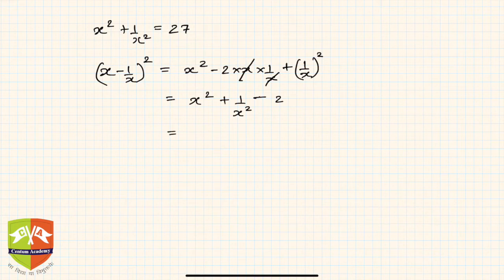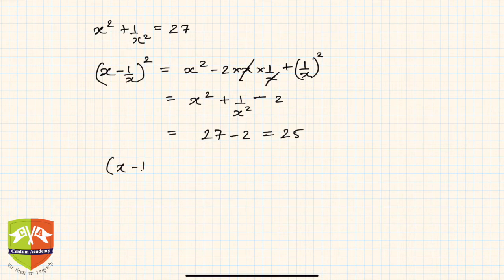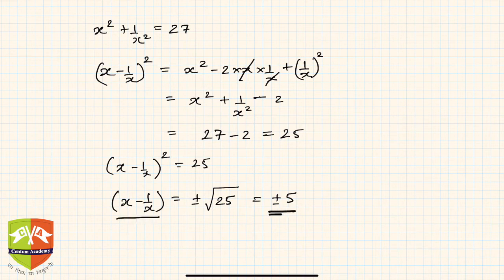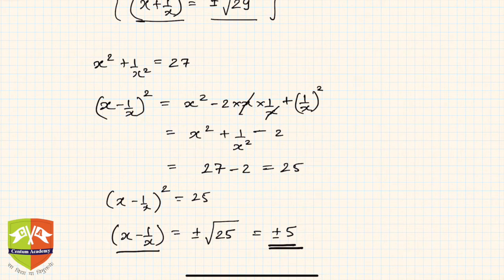But x squared plus 1 upon x squared is given as 27, so 27 minus 2 is 25. That means x minus 1 by x, whole squared, is 25. Square rooting both sides, we get plus or minus under root 25, which is plus or minus 5, since root 25 is 5. So x minus 1 by x equals plus or minus 5.